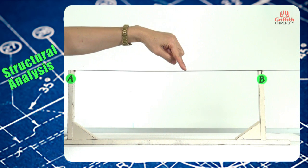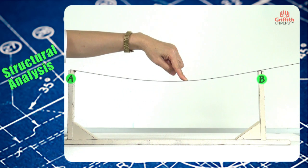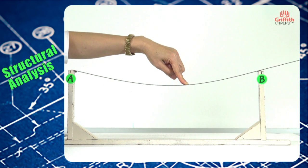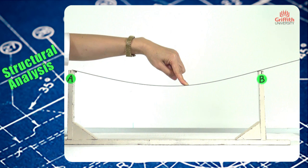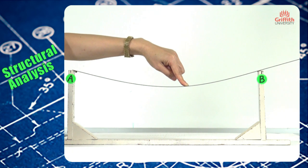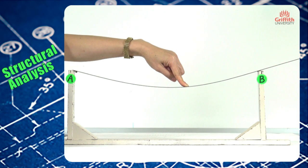look at the deflected shape. A concentrated load coming down, so we should look at a few points. At point A or support A, we notice that this point is not moving up and down or translating horizontally